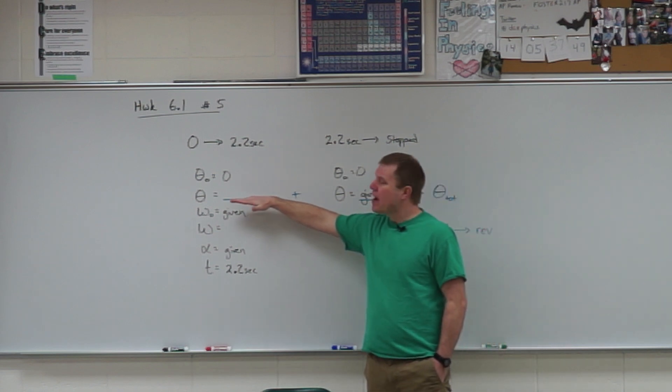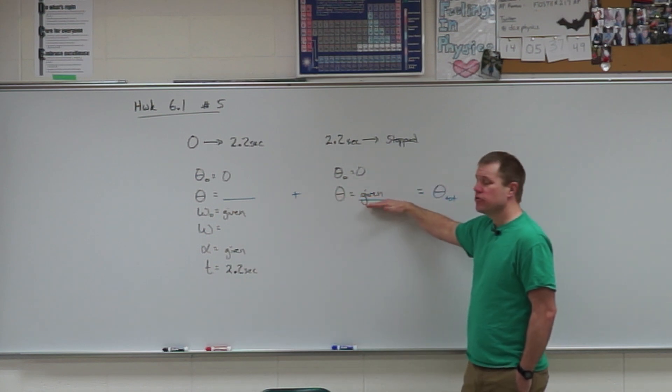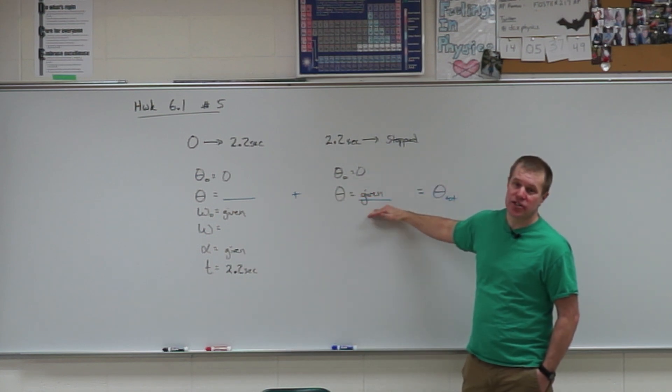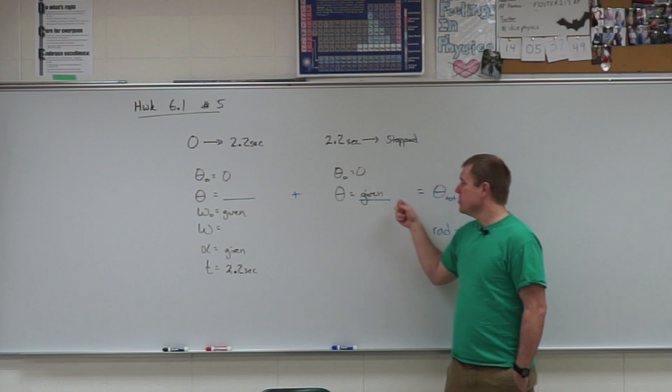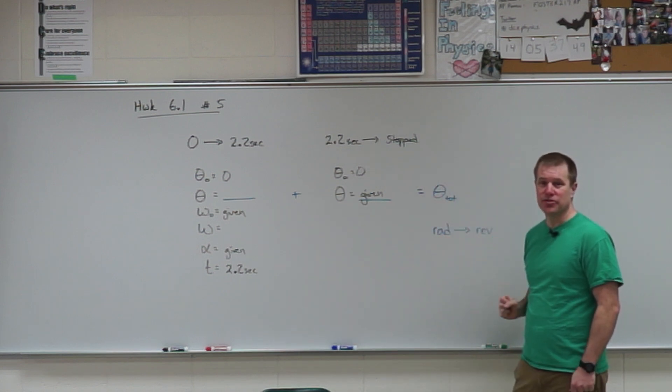So what you have to do is you have to find the angle through which it turns while it's speeding up, the angle through which it turns as it's slowing down, which they actually give you, add those together, you get the total angle, and then make sure you convert radians to revolutions.